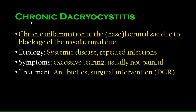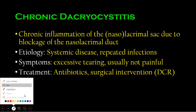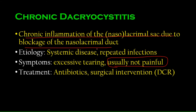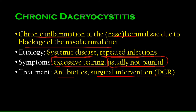Treatment for acute dacryocystitis is antibiotics, and incision and drainage in case of abscess formation. Chronic dacryocystitis is similar but chronic — not painful, no pus production. It is chronic inflammation of the nasolacrimal sac due to blockage of the nasolacrimal duct. Etiology includes systemic disease and repeated infections. The main symptom is excessive tearing — patients just have continuous epiphora, usually not painful. Treatment is antibiotics and surgical intervention such as DCR.